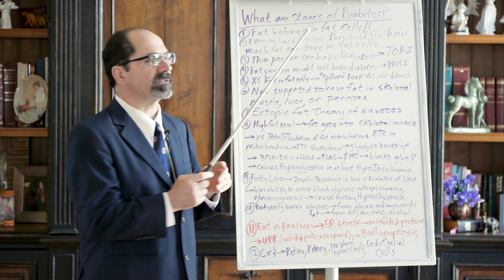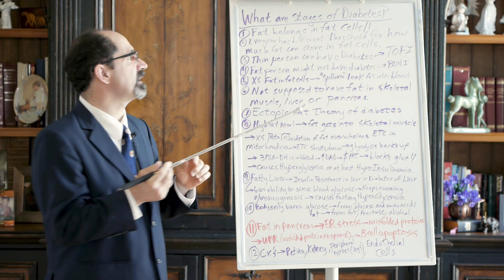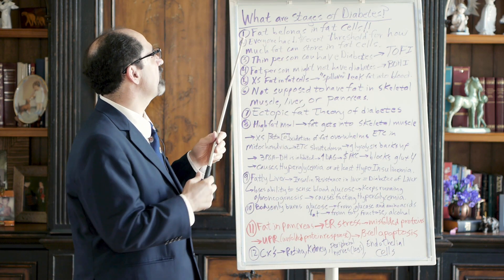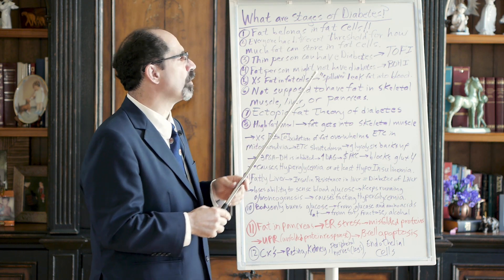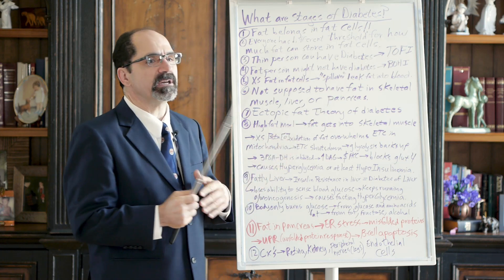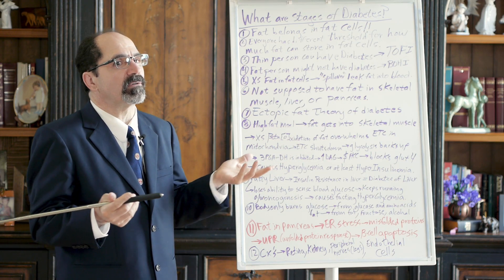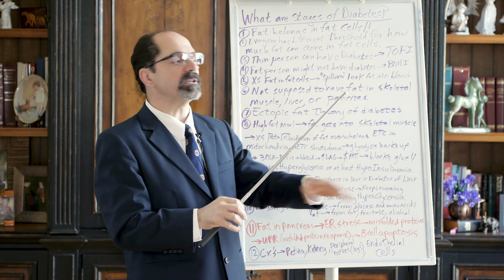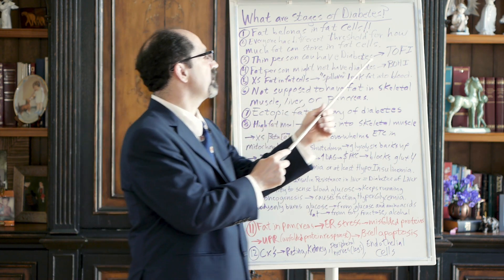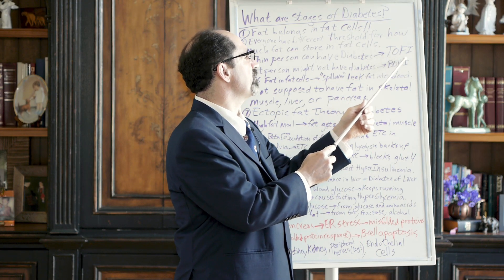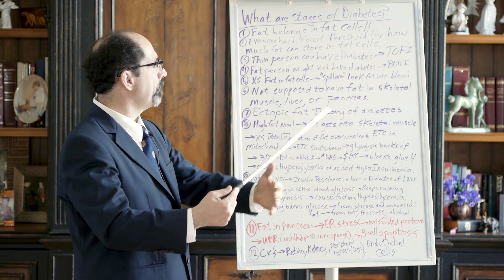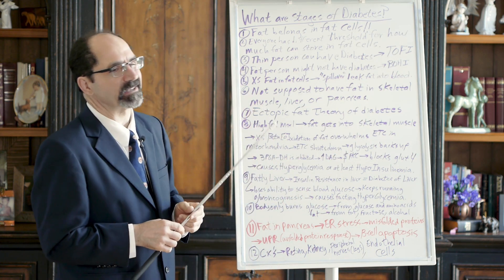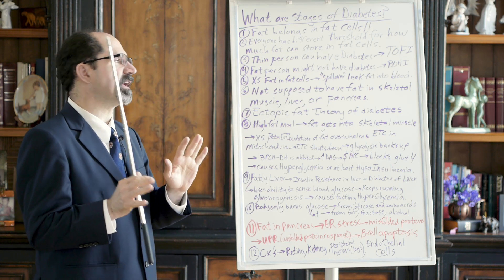Fat belongs in fat cells - that's the only cell in your body that should be storing a lot of fat, specifically white adipose tissue, not brown fat. Everybody has a different threshold for how much fat they can store. That's why some skinny people have diabetes - their body doesn't have the capacity to store much fat, so even though they don't look overweight, they've got ectopic fat in their skeletal muscle, liver, and pancreas. That's sometimes called TOFI: thin on the outside, fat inside. Conversely, some people who are really obese don't have diabetes - sometimes called BOHI: big outside, healthy inside.